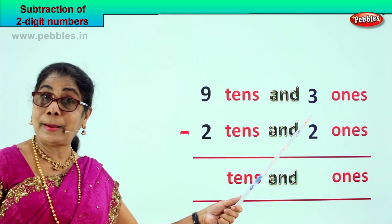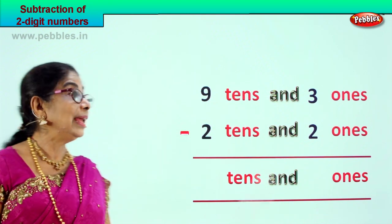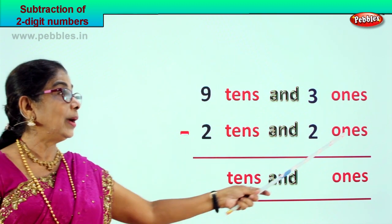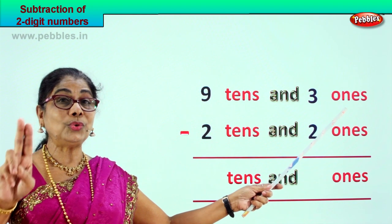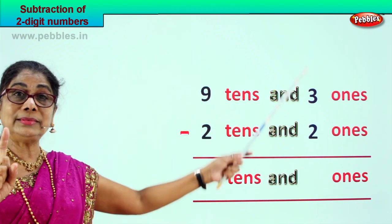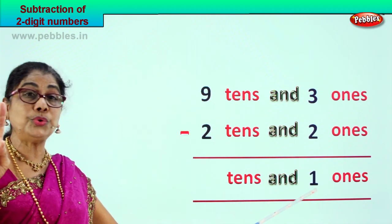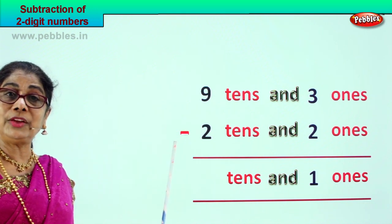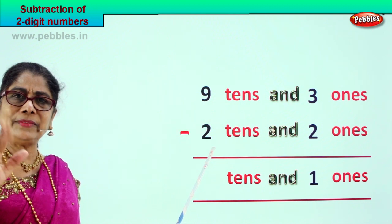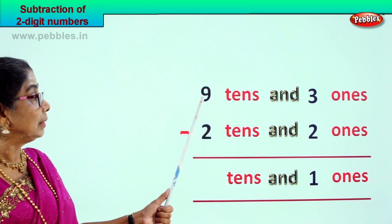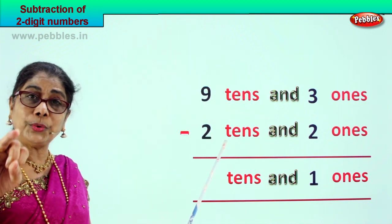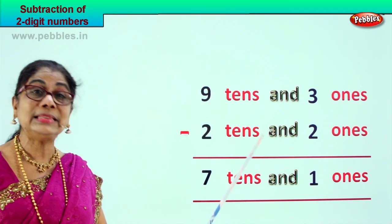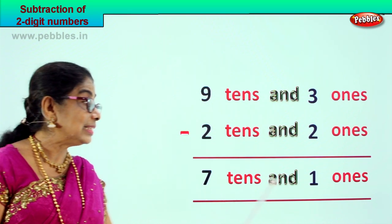9 tens and 3 ones minus 2 tens and 2 ones. 93 minus 22. Let's go to the ones place first — 3 ones minus 2 ones, 3 take away 2 gives you 1. In the tens place: 9 minus 2 — 9 take away 2 is 7. 9 tens minus 2 tens gives you 7 tens. 71 is your answer.